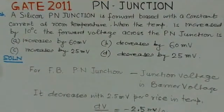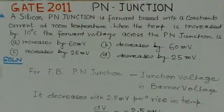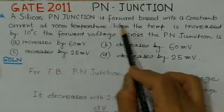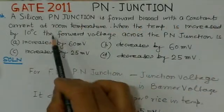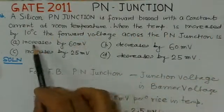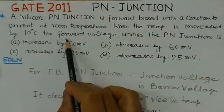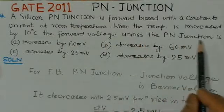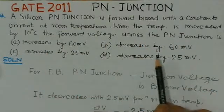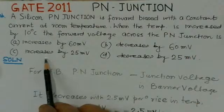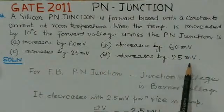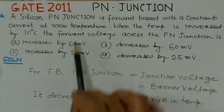This is the GATE 2011 problem. A silicon P-N junction is forward biased with a constant current at room temperature. When the temperature is increased by 10 degrees, the forward voltage across the P-N junction: (a) increases by 60 millivolts, (b) decreases by 60 millivolts, (c) increases by 25 millivolts, or (d) decreases by 25 millivolts.